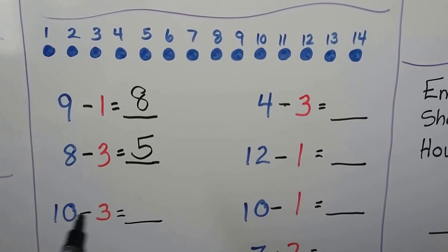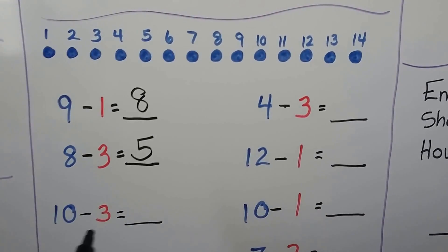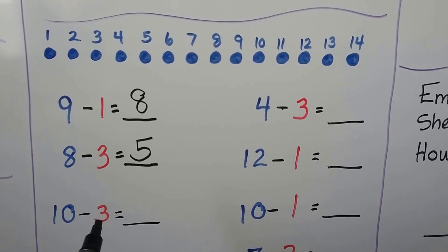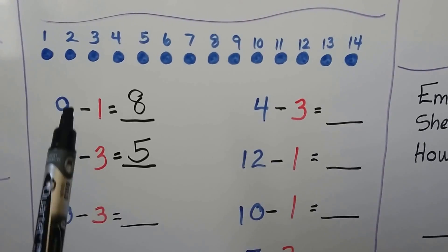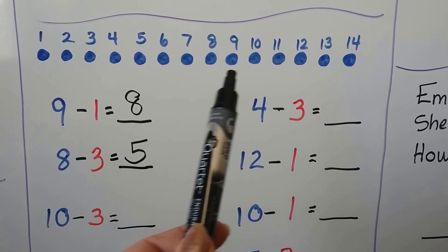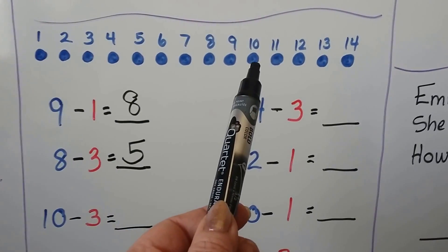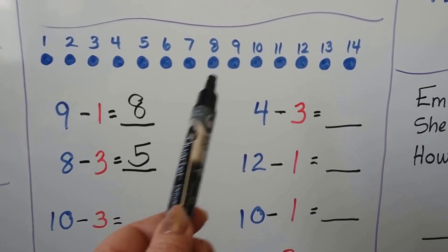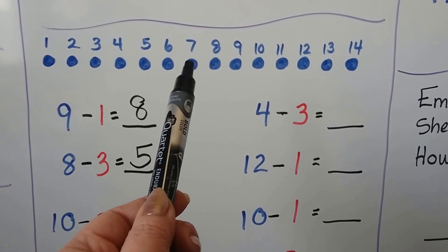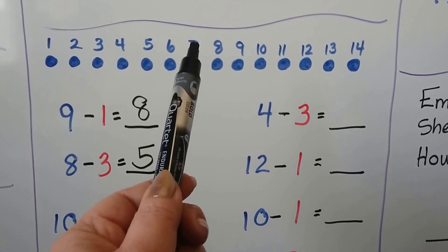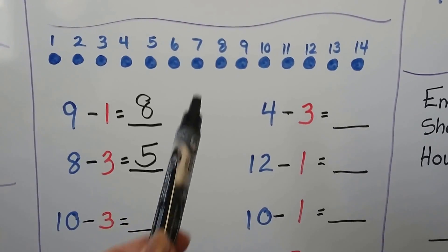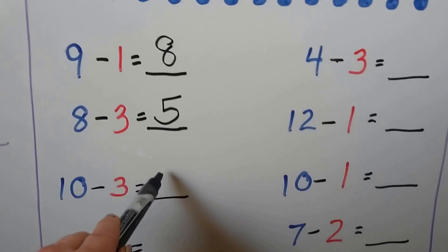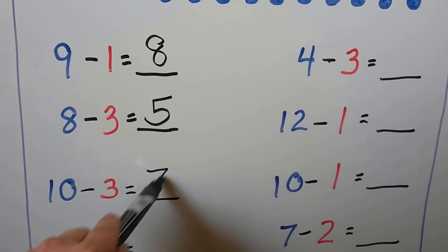10 minus 3. We start at the 10 and count back 3. Let's find the 10 — there it is. Now let's count back 3: 1, 2, 3. That brings us to 7. 10 minus 3 is equal to 7.